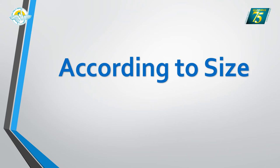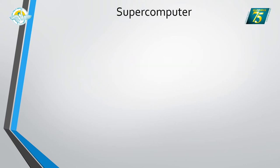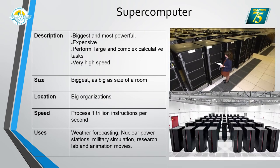According to size, the first type is the supercomputer. As the name suggests, supercomputers are the biggest and most powerful computers, and they are very expensive. They are used to perform large and complex calculations and run at very high speed. The size of a supercomputer is as big as a room. They can process 1 trillion instructions per second and are mainly used in weather forecasting, nuclear power stations, research, and animation movies.